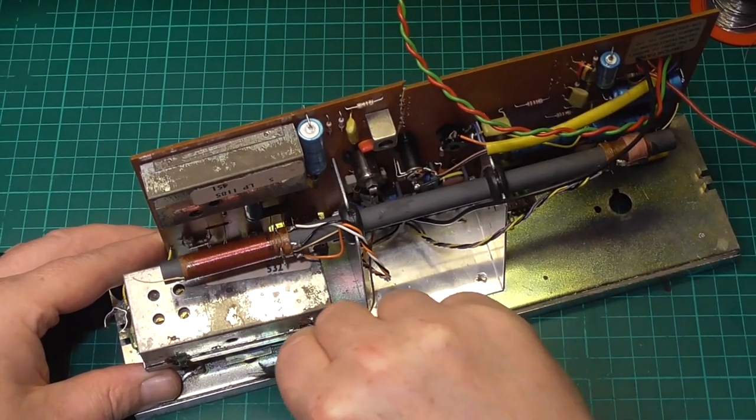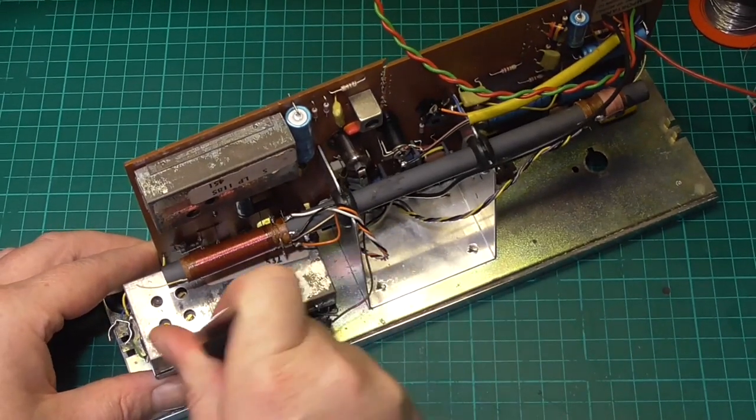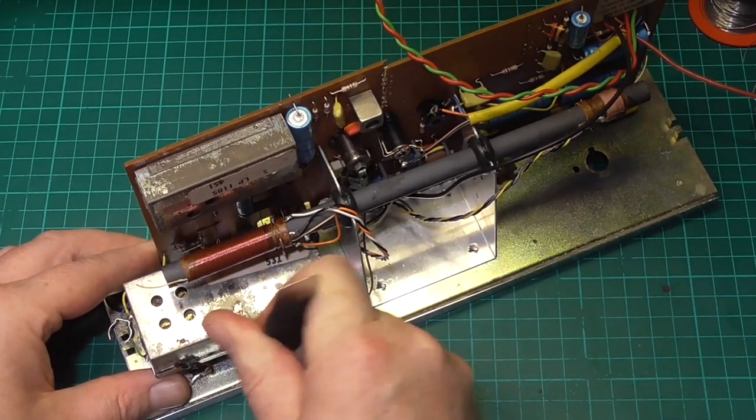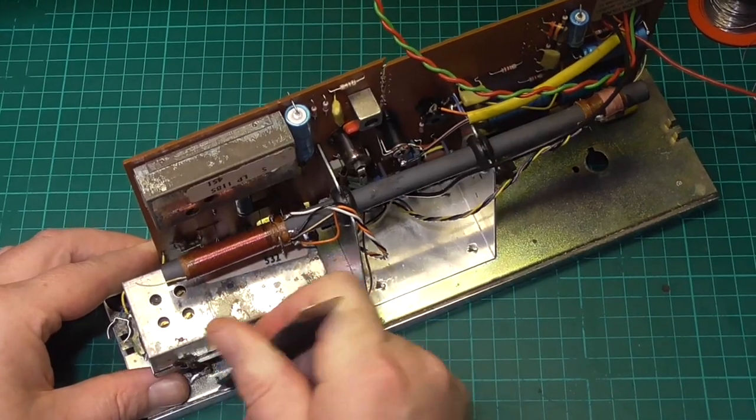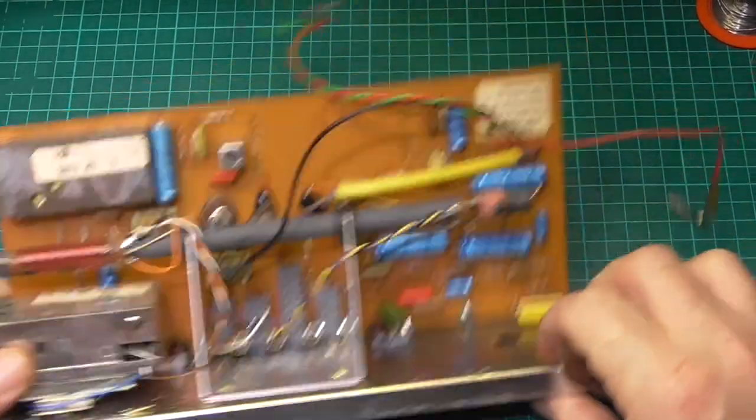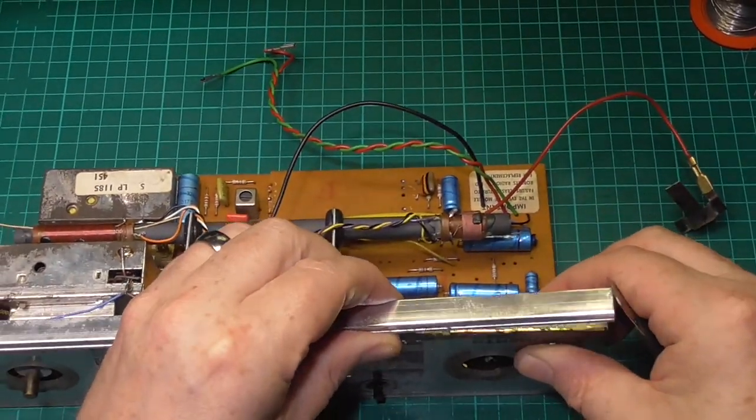You might just be able to bend it back into shape once we've got this done, but it's more likely going to be a perished grommet. Let's just see if I can get that off. You can see I'm just lifting that up.